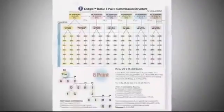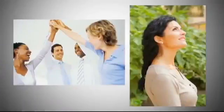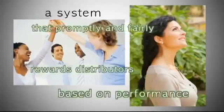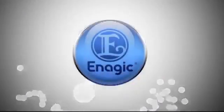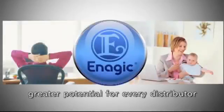Part 2 explains the compensation model structure used among Enagic distributors worldwide. It was Enagic's specific goal to implement a system that promptly and fairly rewards distributors based on performance. Unlike pyramid marketing and other unevenly distributed business models, our sales configuration creates greater potential for every distributor to earn money and climb the ranks.